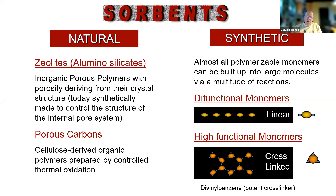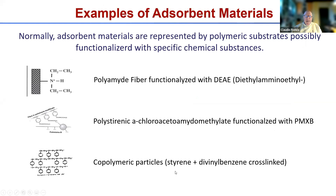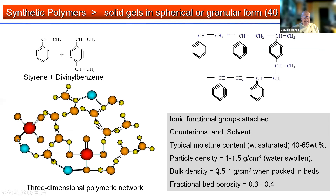Sorbents can be natural or synthetic. Most of the sorbents we use today are synthetic with difunctional monomers that are linked, or highly functional monomers that are cross-linked by divinyl benzene. Examples of absorbent materials include polyamide fibers functionalized by DIA, polystyrenic fibers functionalized with polymixin B, or copolymeric particles like styrene and divinyl benzene cross-linked. The monomers can create a three-dimensional polymeric network, and normally the fractional porosity of the bed is 30 to 40 percent.